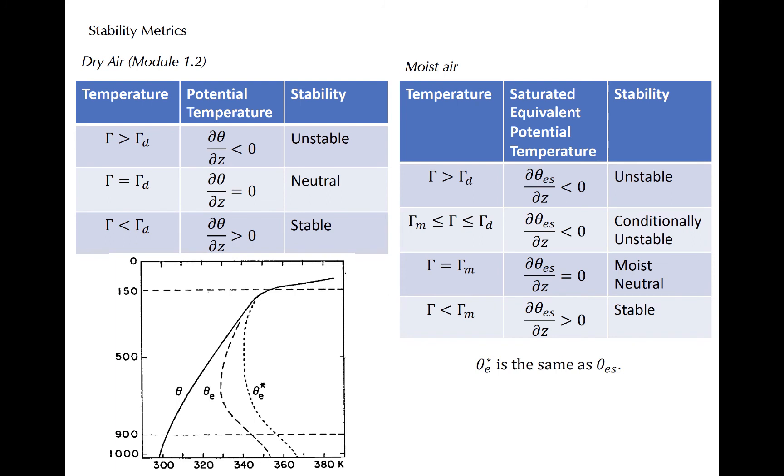Mean profiles of tropical potential temperature, theta E, and saturation theta E are shown here. On average, you can see that motions below about 500 millibars are stable to dry motions by looking at the theta profile, but the environment would be considered conditionally unstable because saturation theta E decreases with height in the lower troposphere. The typical tropical atmosphere becomes nearly moist neutral in the mid to upper troposphere, and of course the atmosphere rapidly becomes stable above the tropopause.